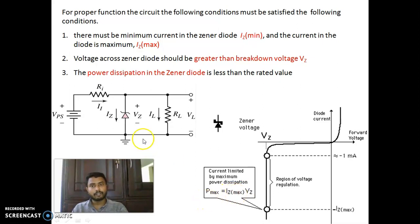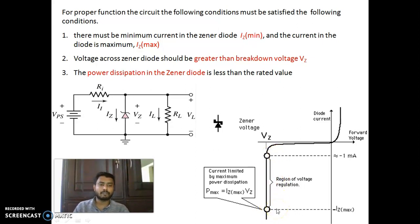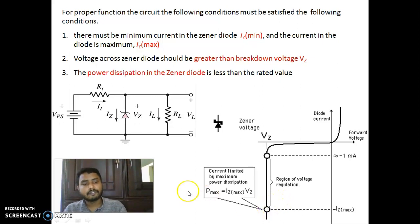The third condition: the power dissipating across the Zener diode should be less than the maximum rated power value. These are the three important conditions to operate a Zener diode as a voltage regulator. First, the voltage across the Zener diode should be greater than the Zener voltage or breakdown voltage. Second, the current through the Zener diode should be between IZ minimum and IZ maximum. Third, the power dissipation in the Zener diode should be less than the maximum rated value.